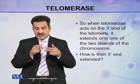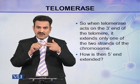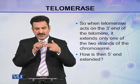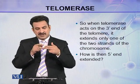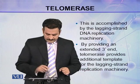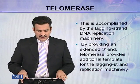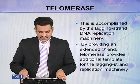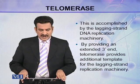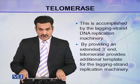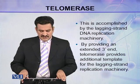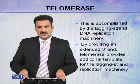The other strand — the 5' end — was already short, so how will it be completed? This is accomplished by the lagging strand DNA replication machinery. By providing an extended 3' end, telomerase provides additional template for the lagging strand replication machinery.